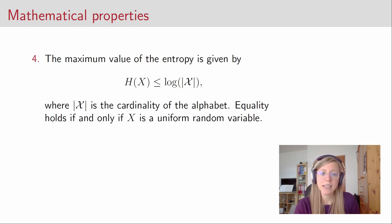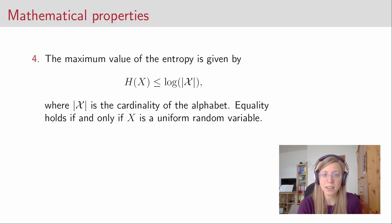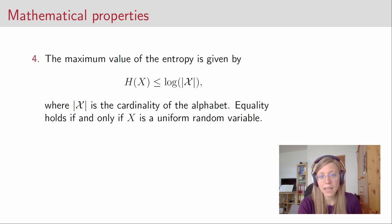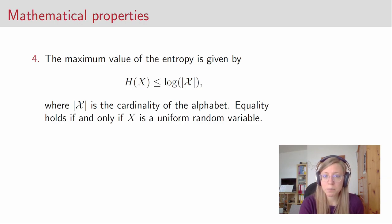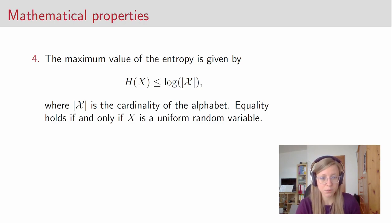The last property is that the maximum value of the entropy is given by the logarithm of the cardinality of the alphabet. So if we have four outcomes, the maximum entropy is the logarithm of four. Equality holds if and only if X is a uniform random variable. I will not prove this here, but it follows from the fact that the so-called relative entropy between two probability distributions is a non-negative quantity.